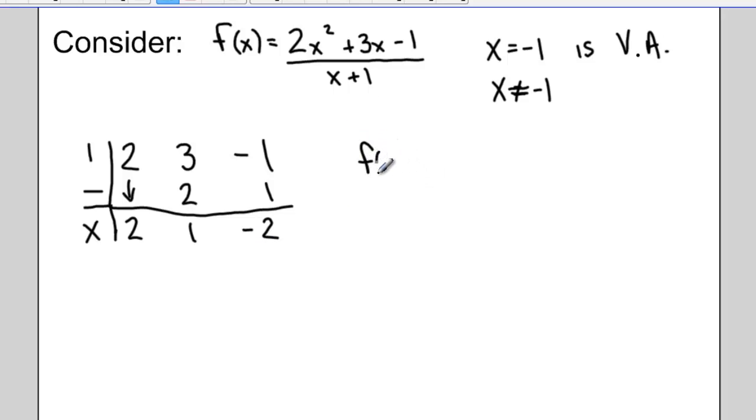And this lets me write a different statement. This lets me write that f of x is equal to 2x plus 1 minus the remainder which is 2, or negative 2 over x plus 1. These two statements are equivalent, they're the same. Well let's consider this part of the function.